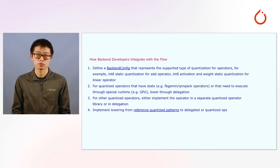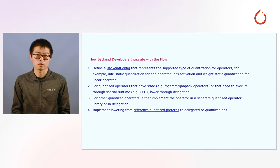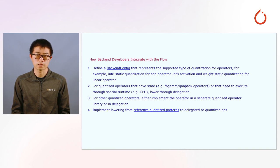The flow is also extensible to new backends that support quantized inference. The main steps are: first, define a backend config to specify the supported type of quantization for operators or operator patterns; then implement quantized operators through delegation or a quantized operator library, depending on the specific use case; finally, implement lowering passes to convert the reference quantized patterns to the delegated quantized module or quantized operators.